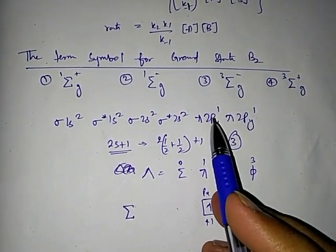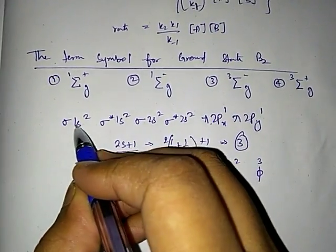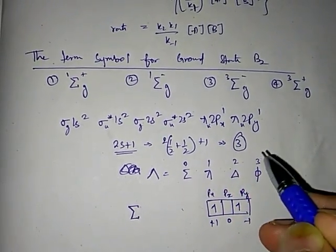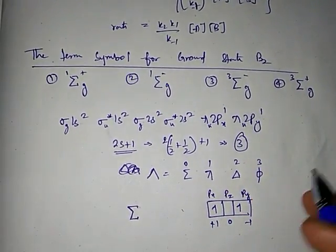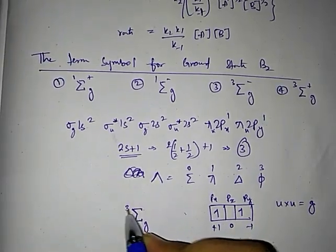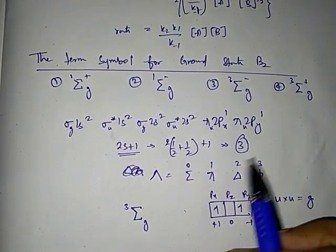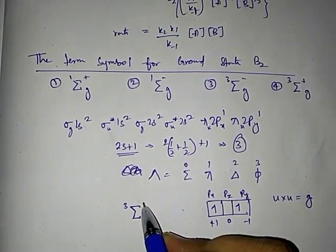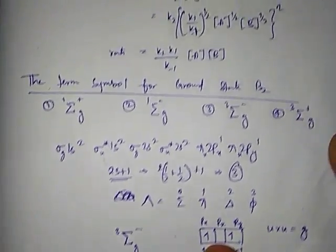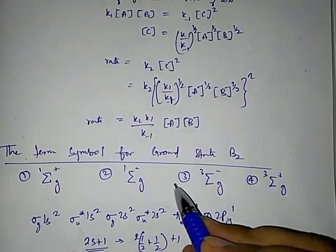For the gerade/ungerade parity: the π2p orbitals are ungerade. Ungerade × ungerade = gerade, so the parity is g. For the +/− sign: since the electrons are in π orbitals, the sign is minus. Therefore the complete term symbol for B₂ is ³Σg⁻, which corresponds to option number three.